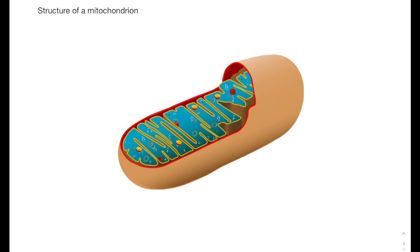If we start from the outside, we have the outer membrane and this contains transport proteins required for moving pyruvate, which is made in the cytosol, into the mitochondrion.